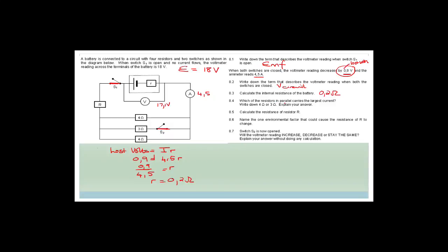Which of the parallel resistors — 4 Ω or 3 Ω — carries the largest current? More current flows through the smaller resistor. The answer is 3 Ω. The reason: V across parallel branches is always equal. If R decreases, I must increase (V = IR).